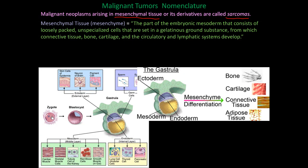Starting from a zygote, which develops into a blastocyst and then a gastrula, the gastrula is made up of three layers: the ectoderm, mesoderm, and endoderm. The mesoderm gives rise to the mesenchyme, which differentiates into bone, cartilage, connective tissue, and adipose tissue. Any malignant tumor derived from mesenchymal tissue is called a sarcoma — this may be an important test point.